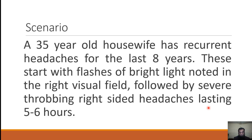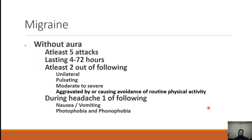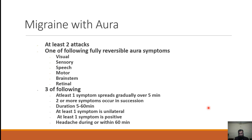The bright light in the right visual field is the aura. The diagnostic criteria for migraine without aura: at least five attacks lasting 4 to 72 hours if untreated. At least two of the following features: unilateral location, pulsating quality, moderate to severe intensity causing the patient to stop activity, and aggravated by or causing avoidance of routine physical activity. Also, at least one of the following: nausea or vomiting, or photophobia and phonophobia.